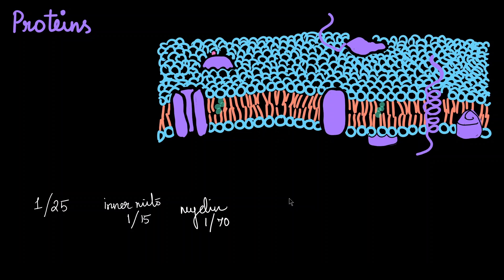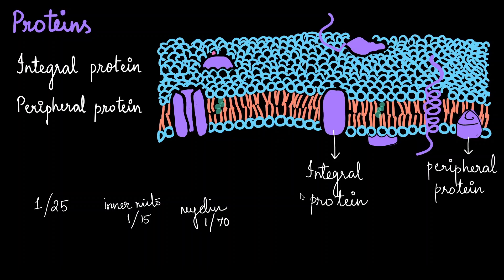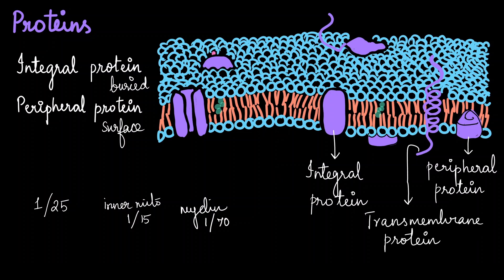The proteins found on the membrane can be of two types: integral proteins or peripheral proteins. Integral proteins are usually buried within the cell membrane, whereas peripheral proteins are present on the surface. Some integral proteins extend to both the outside and inside of the cell; these are called transmembrane proteins. There are also proteins that act as small tubes allowing ion movement through the cell membrane, called channel proteins. Protein distribution in the cell membrane is therefore not uniform.